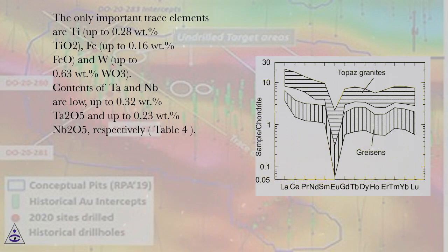Contents of Ta and Nb are low, up to 0.32 wt% Ta2O5 and up to 0.23 wt% Nb2O5, respectively, Table 4.